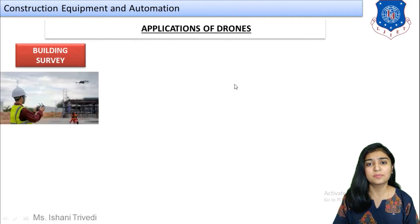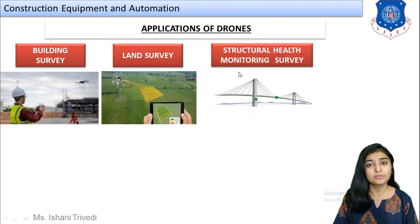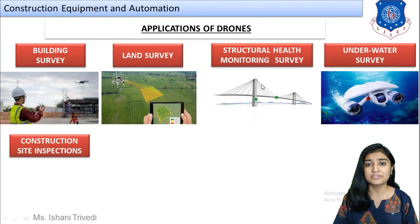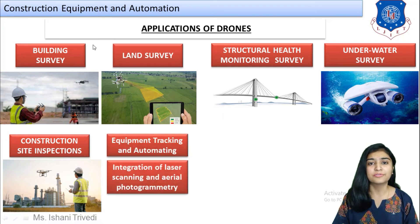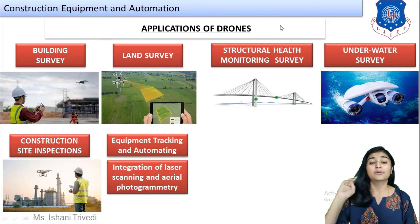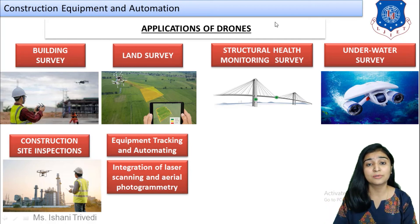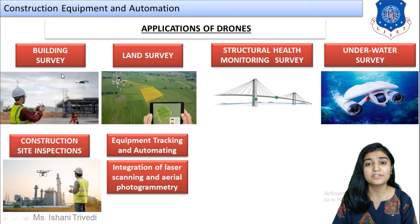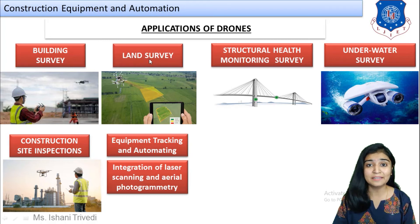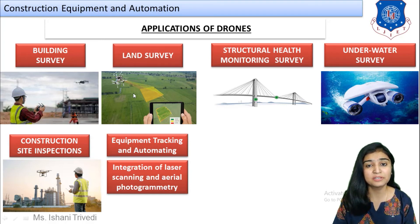Now let us talk about the different applications of drones, which we will also study in detail later. The first application is building survey — for existing buildings, carrying out surveys at various locations, roofs, or facades. The second application is land survey, which covers aerial mapping, topographical mapping, aerial photogrammetry, agricultural purposes, soil erosion checking, and monitoring.